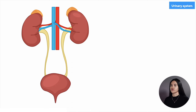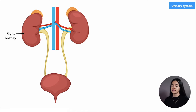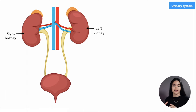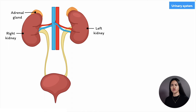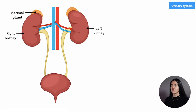The kidneys are bean-shaped organs located behind the abdominal cavity, behind the peritoneum, one on each side of the vertebral column — the right kidney and the left kidney. It's about the size of a clenched fist. On top of each kidney is an adrenal gland which produces and releases several hormones. The right kidney is actually slightly lower than the left due to the presence of the liver in the upper right quadrant, and the kidneys are connected to the ureters which go down to the pelvic cavity where they connect behind the bladder.